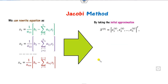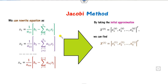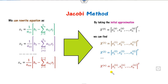Once we have these expressions, we start with any initial approximation X₀ = (x₁, x₂, ..., xₙ). Substituting into the first equation gives a new x₁; substituting into the second gives a new x₂, and so on. We then substitute the updated values back into all equations to get the next iteration, continuing until the desired accuracy is achieved.